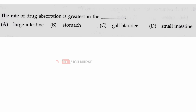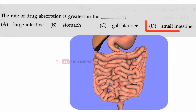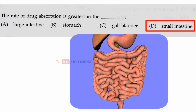The rate of drug absorption is greatest in — the correct answer is D — the small intestine. As the surface area is more, the drug absorption is greatest in the small intestine.